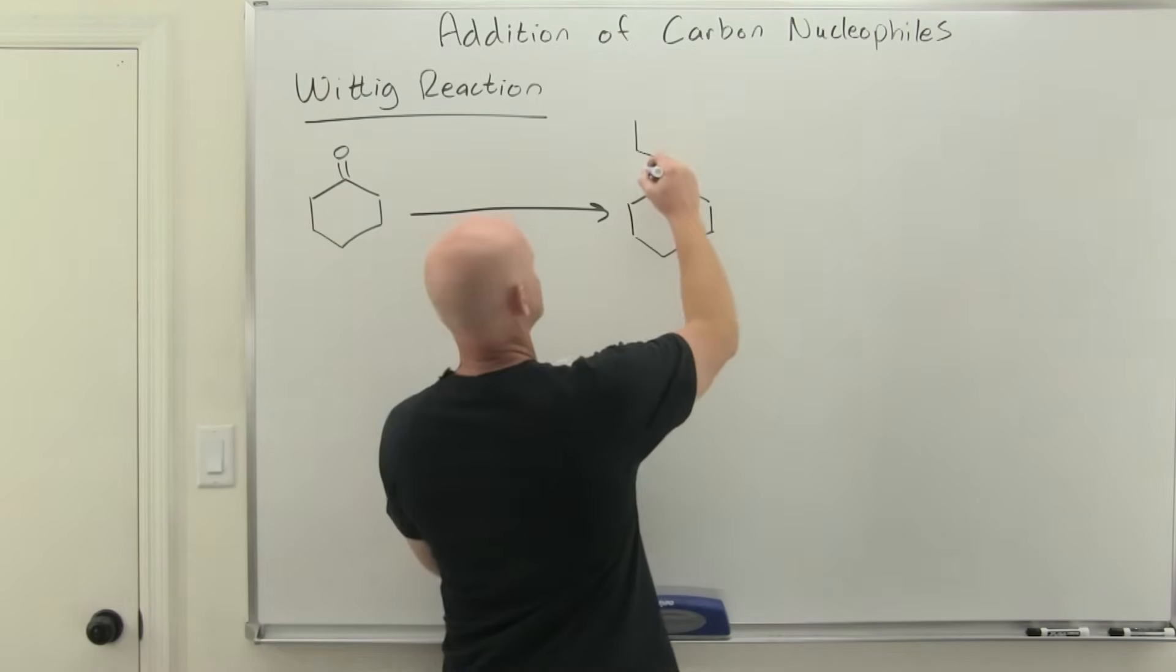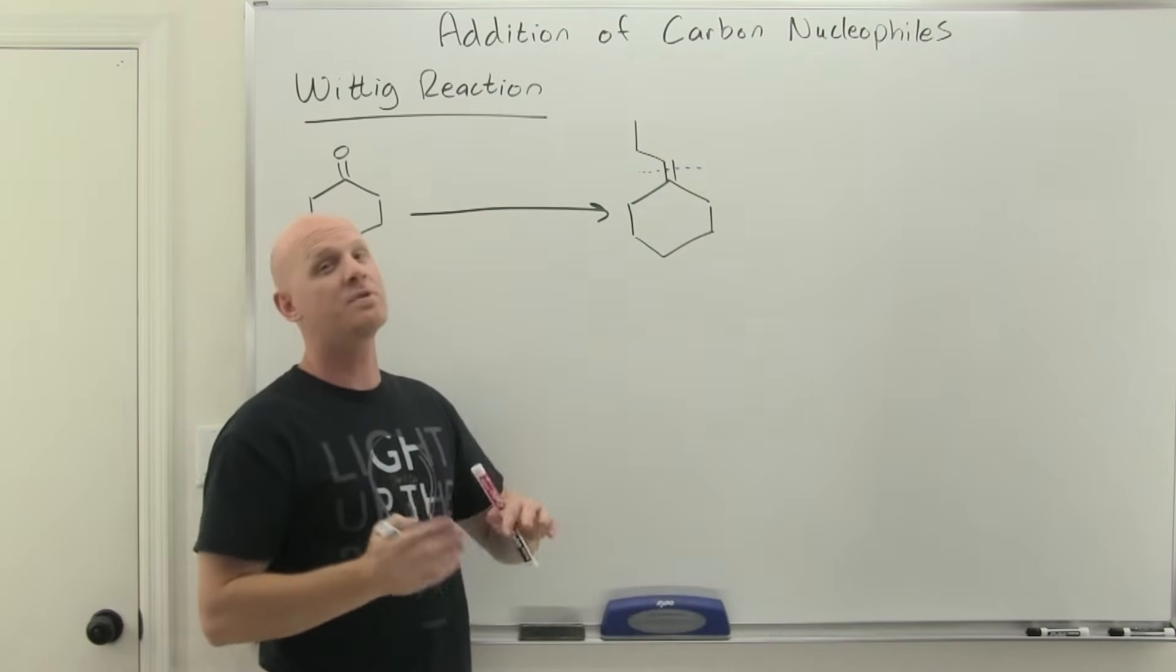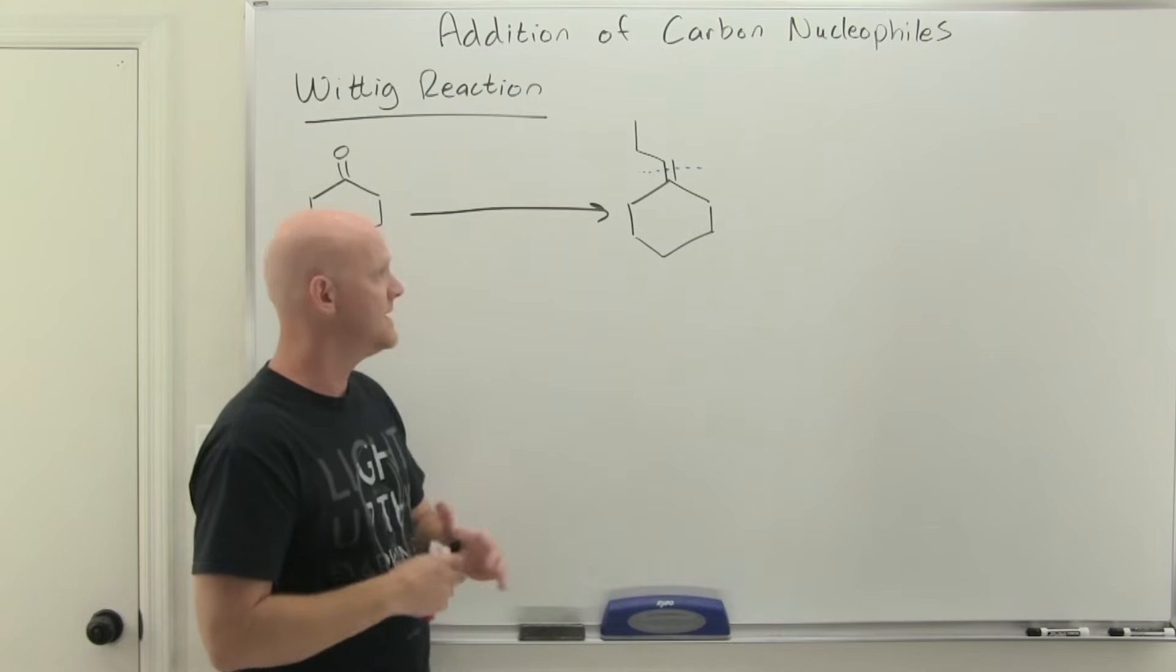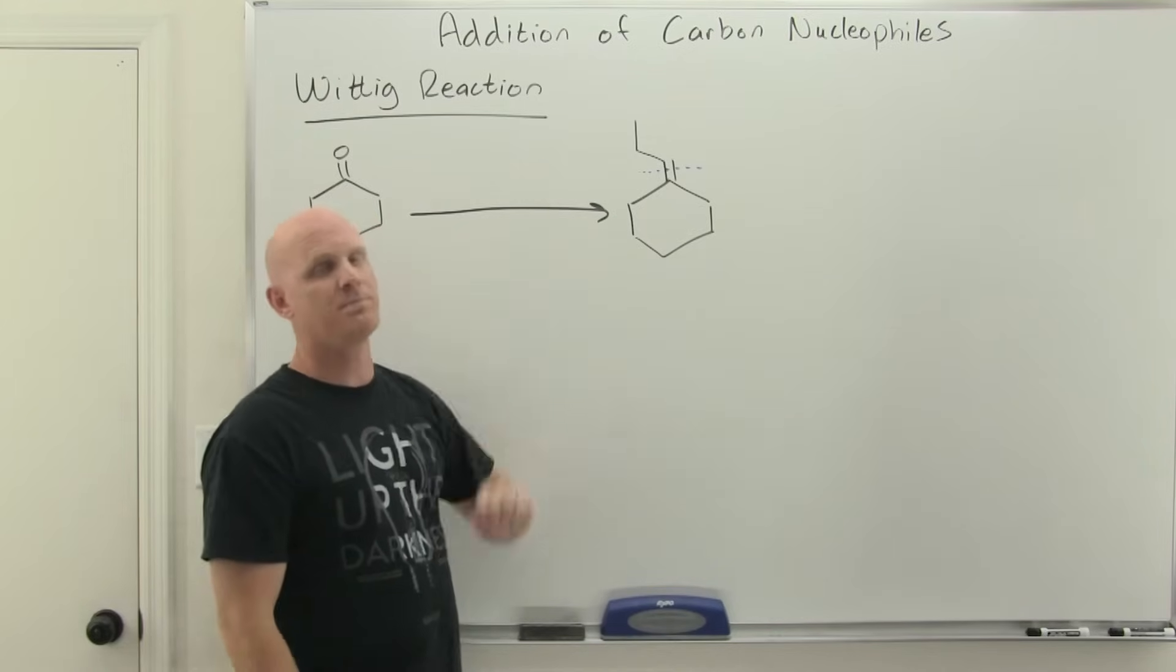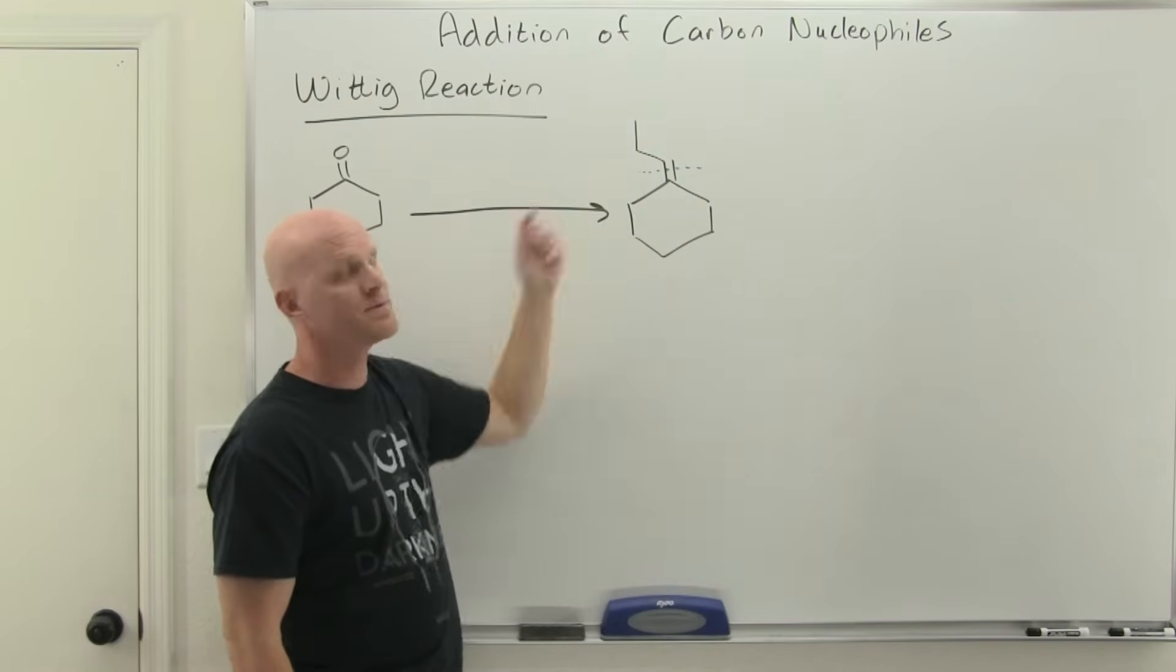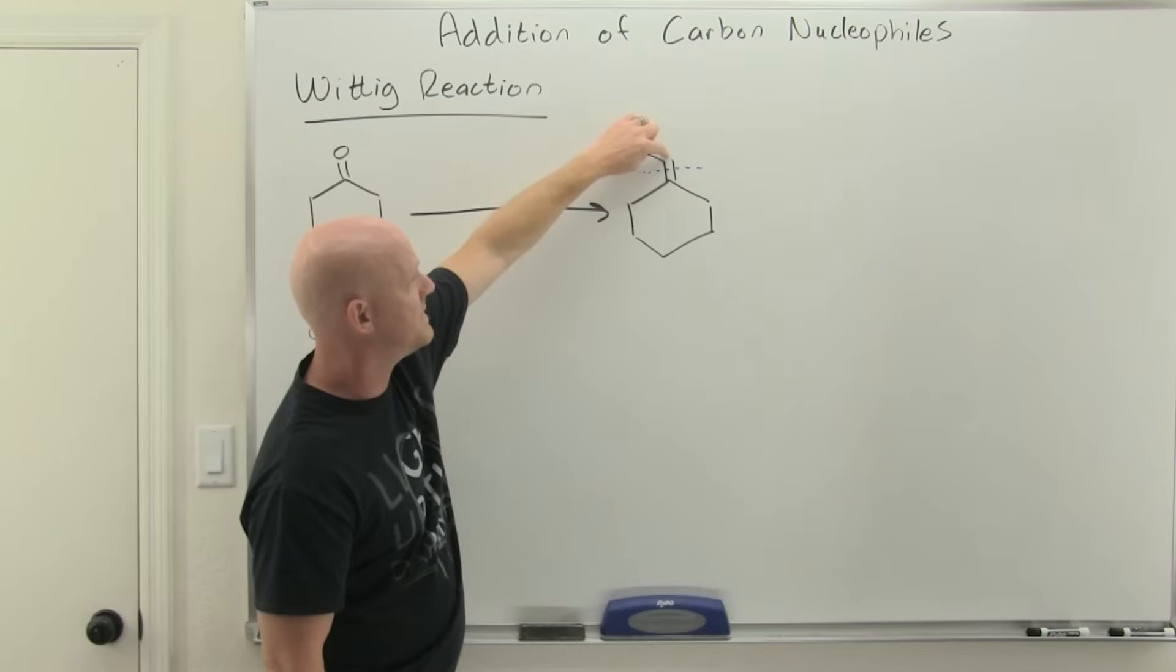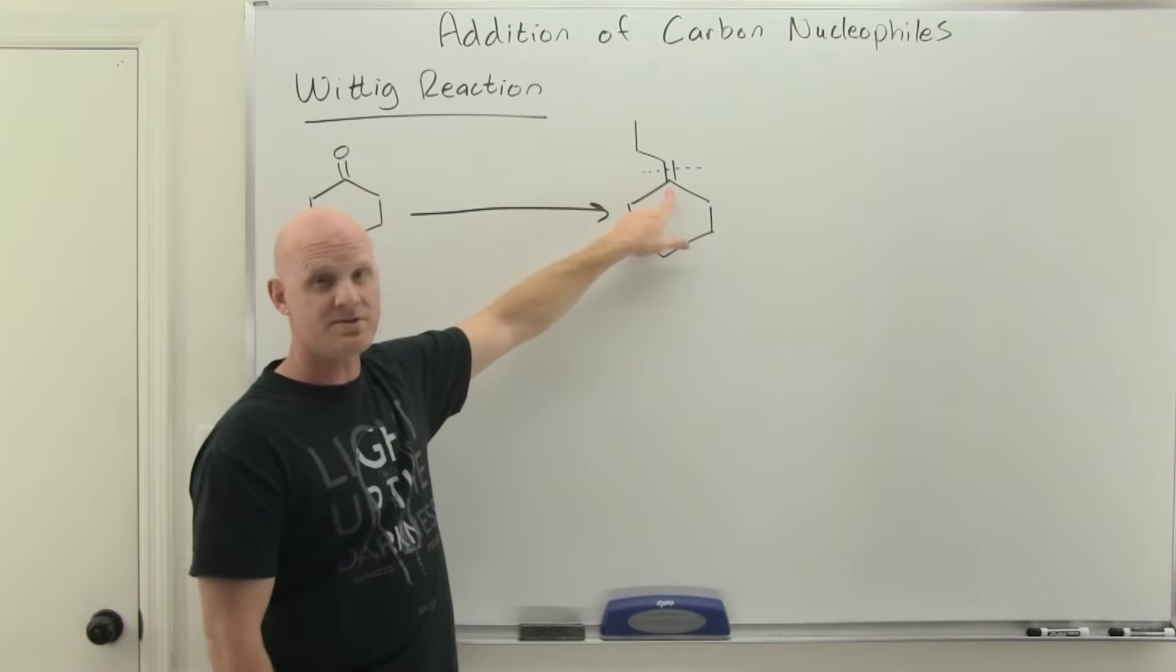What we want to do is actually go backwards from the alkene, break it in half to kind of predict what reactants we would have had. If you look for the best possible Wittig setup, you want to see whichever side of the alkene, whichever one of these sp2 carbons is less substituted—in this case that's this side up here—and then this side is the more substituted side.